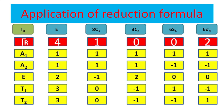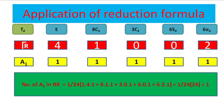For the Td point group, the five irreducible representations are A1, A2, E, T1, and T2. For A1: 1 upon 24 into (1 into 4 into 1) plus (8 into 1 into 1) plus (3 into 0 into 1) plus (6 into 0 into 1) plus (6 into 2 into 1) — summation is 24, so 24/24 = 1. A1 occurs once. For A2: substituting the A2 characters gives a summation of 0, so A2 does not occur. For E: substituting gives summation 0, so E does not occur.